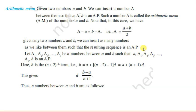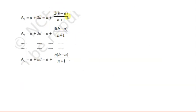So if you are inserting n means between a and b, the common difference is b minus a divided by n plus 1. Then A1 is the second term, so A1 equals a plus d, that is a plus (b minus a) upon (n plus 1). A2 equals a plus 2d, and likewise An, which is the n plus 1th term, equals a plus nd, that is a plus n(b minus a) upon (n plus 1).